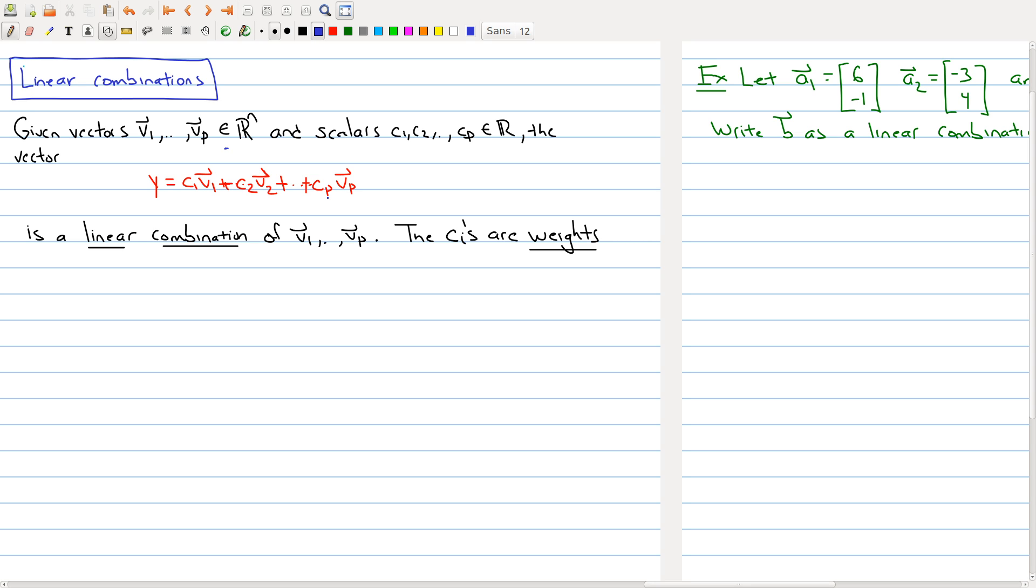So let me begin by giving you an example of a linear combination. I can just take any two vectors. So I'm going to take the vector a₁ to be [1, 2, 3].